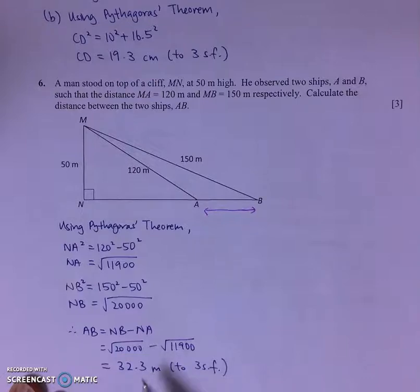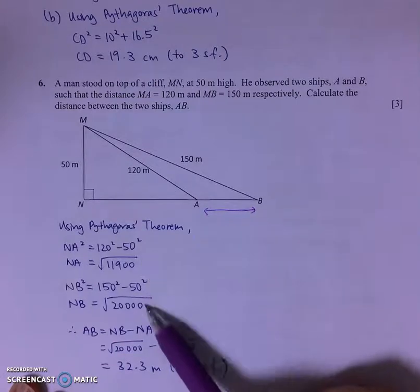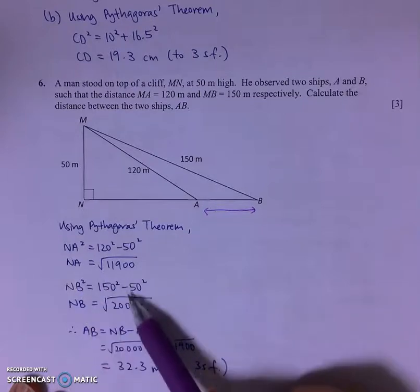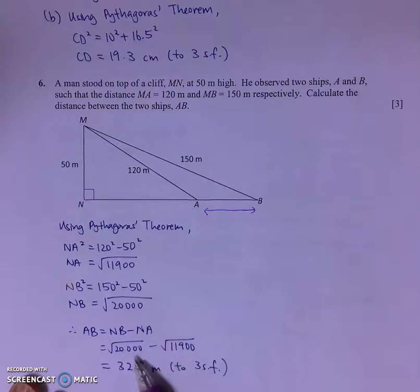Now if you want to, you can actually choose to evaluate the values of NA and NB to 5 significant figures before using them in your intermediate working and then finding the answer for the length of AB rounded off to 3 significant figures.